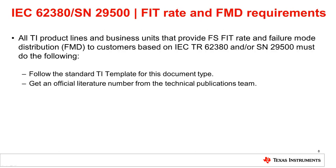All TI product lines and business units that provide functional safety fit rate and failure mode distribution to customers based on IEC TR-62-380 and/or SN29500 must do the following: the product line must follow the standard TI template for this document type, and the product line must also get an official literature number from the technical publications team.